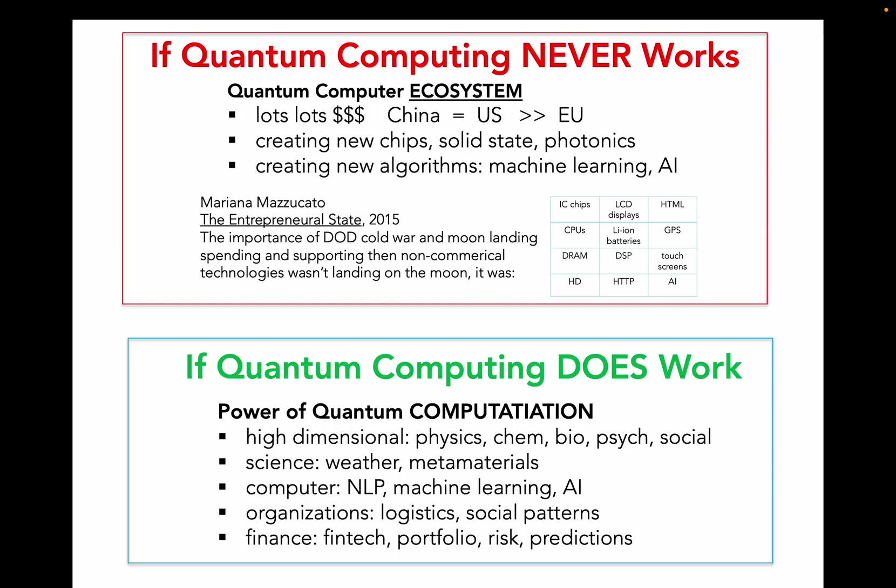Now, even if quantum computing never comes to fruition, we've already created a quantum computer ecosystem where people have spent lots of money, created new chips and solid state devices and photonics, and are creating new algorithms for machine learning and AI from a quantum standpoint. The point that Mariana Mazzucato has made in her book, The Entrepreneurial State, was that the importance of the defense and the Cold War and the moon landing wasn't to go to the moon, but to create a whole series of technologies that opened up the doorway ultimately for much faster computers and iPhones and a whole bunch of new technology. In the same way, the research being done in quantum computing is creating a whole ecosystem of other things. So even if quantum computers never materialize, there will be lots of use of other quantum properties in our world.